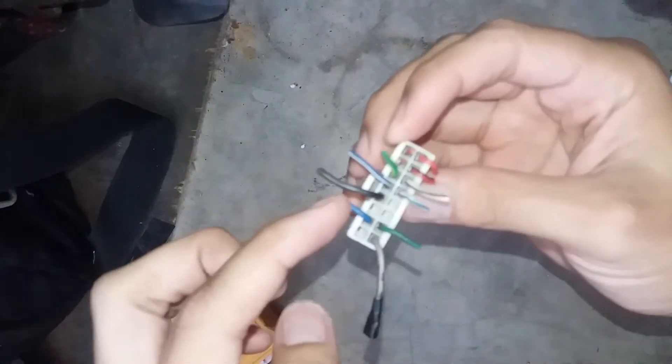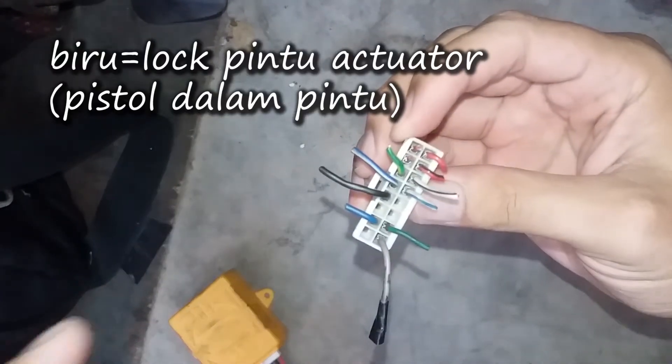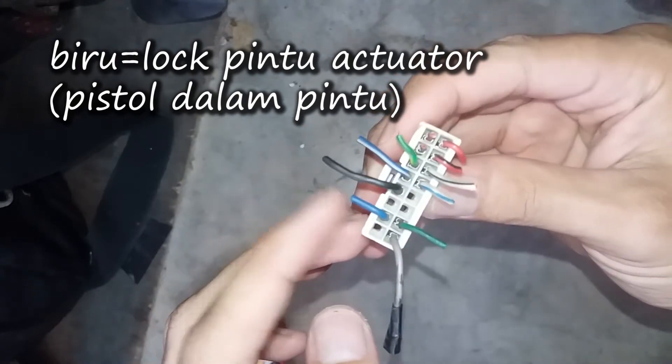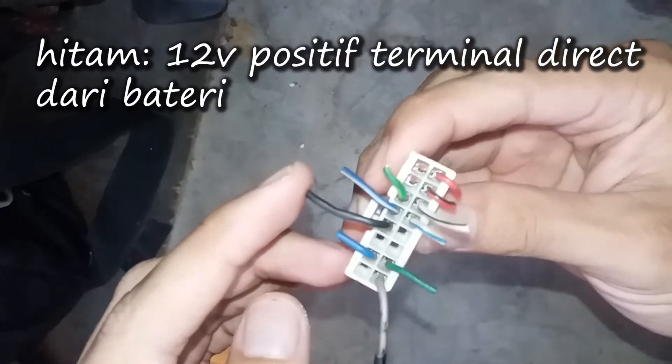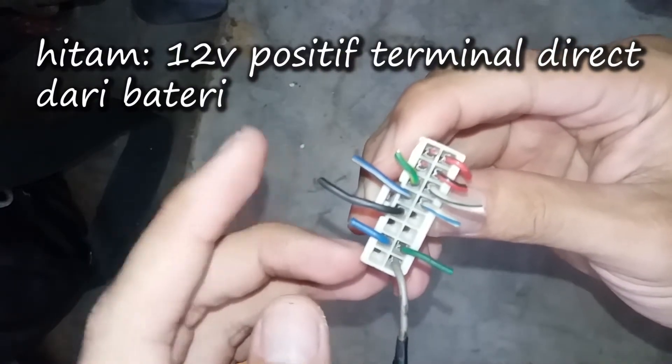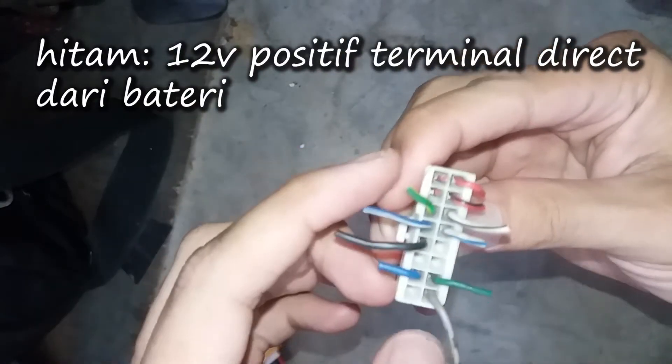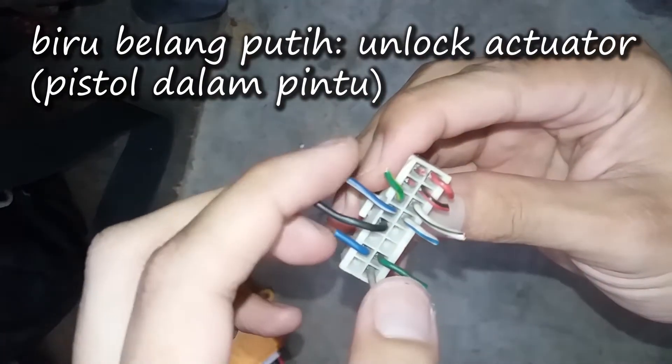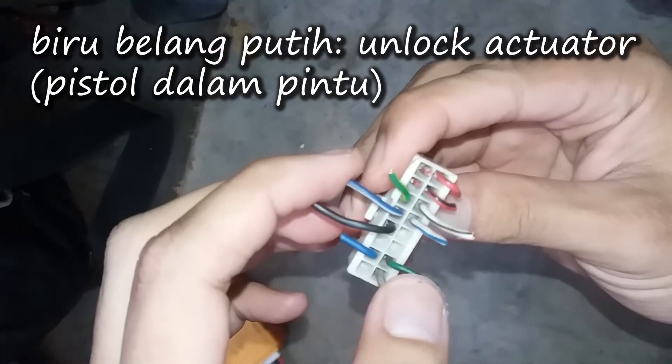Starting from here: Blue is for lock, the door lock. This blue comes from the actuator that sits inside the door. Black is positive, direct from the battery. Blue with white stripe is unlock.